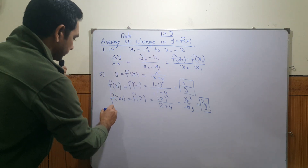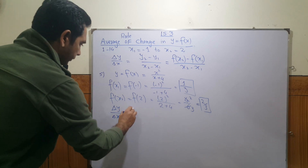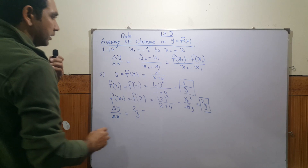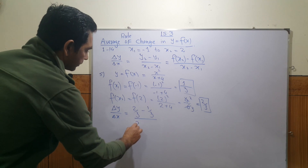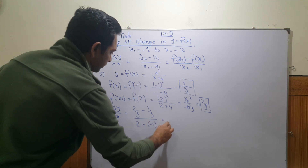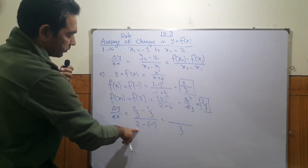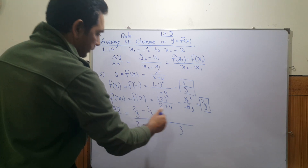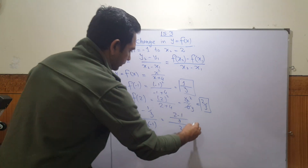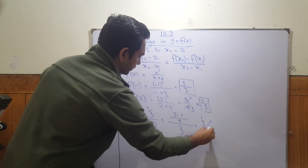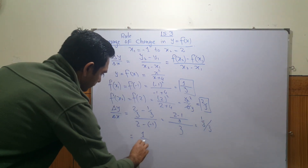Now substituting into the average rate of change formula: (2/3 - 1/3) divided by (2 - (-1)). The numerator is 2/3 minus 1/3, giving 1/3. The denominator is 3. Taking the LCM, that gives us 1 over 3 divided by 3, which is 1 over 9.